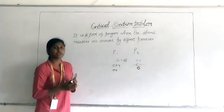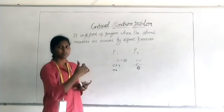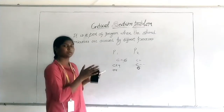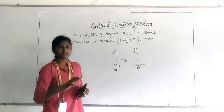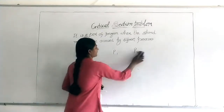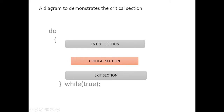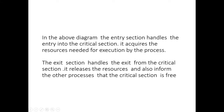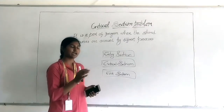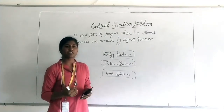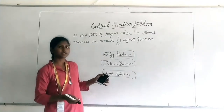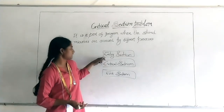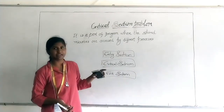To solve this, we create one entry section so that only one process can come at a time, and then another process can come separately. We will make one section called the entry section and another called the exit section. Whenever any process comes, it will first enter into the entry section, then only it can go to the critical section.